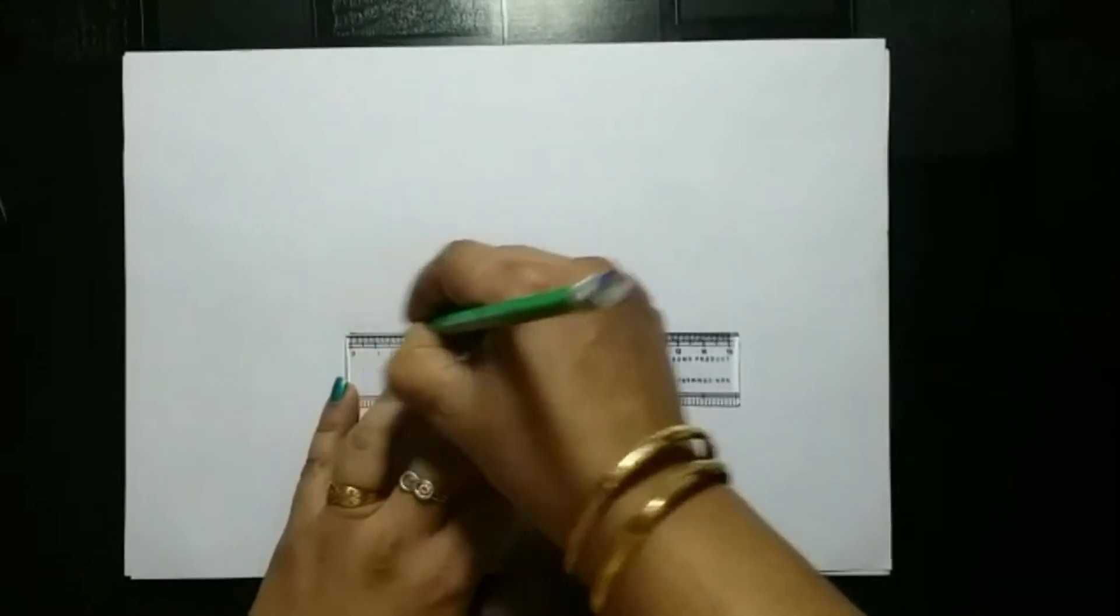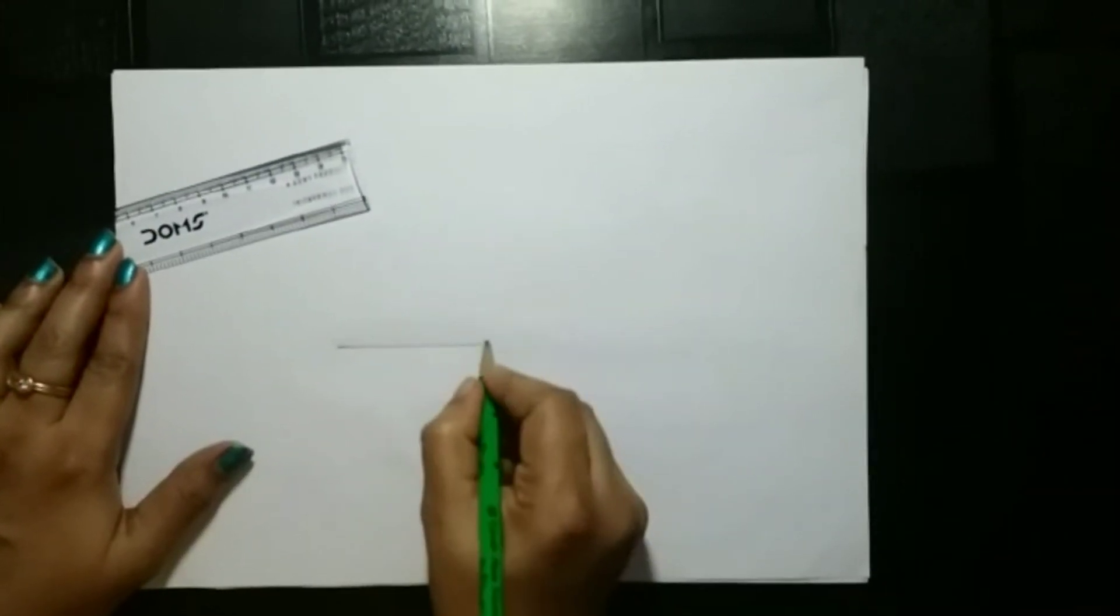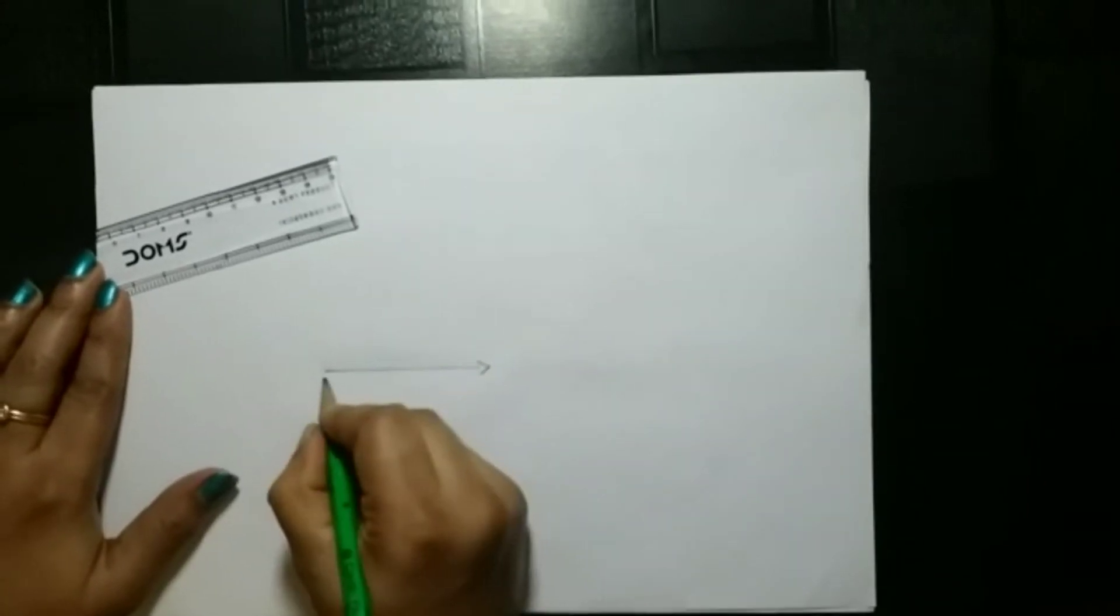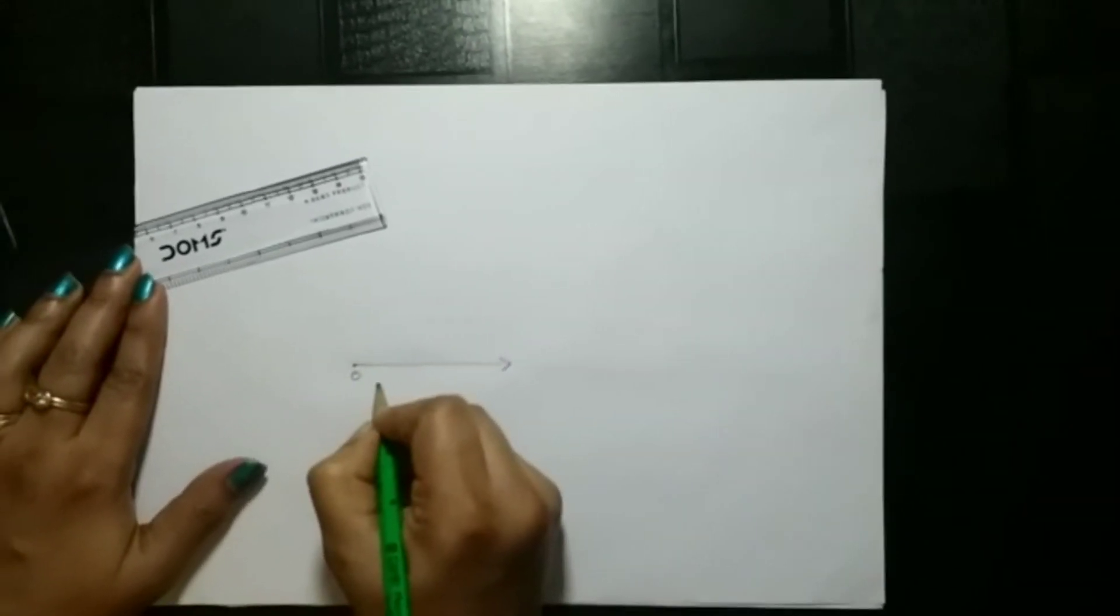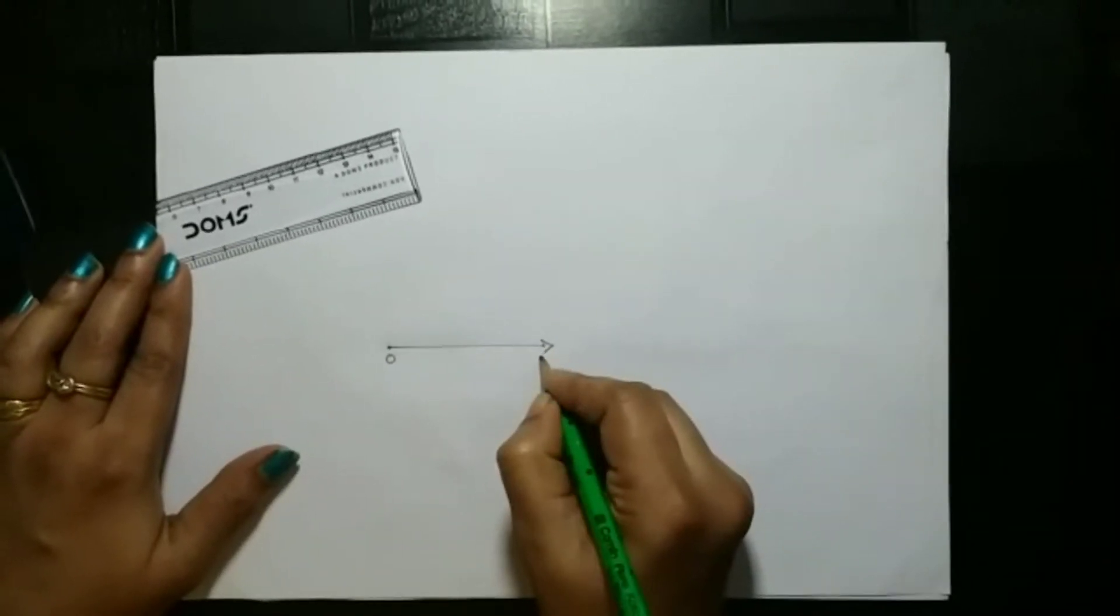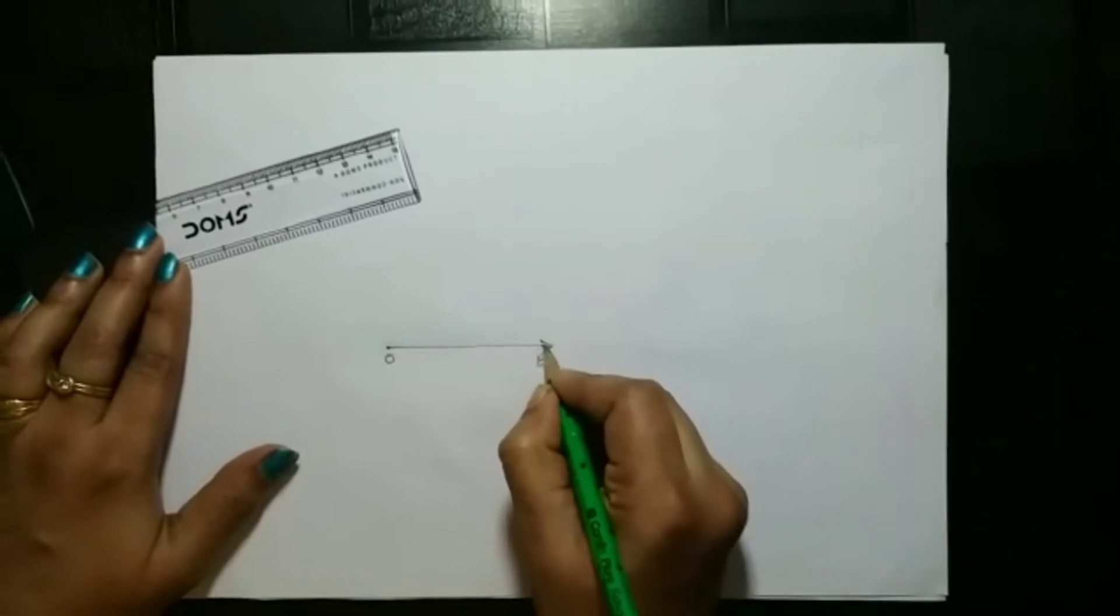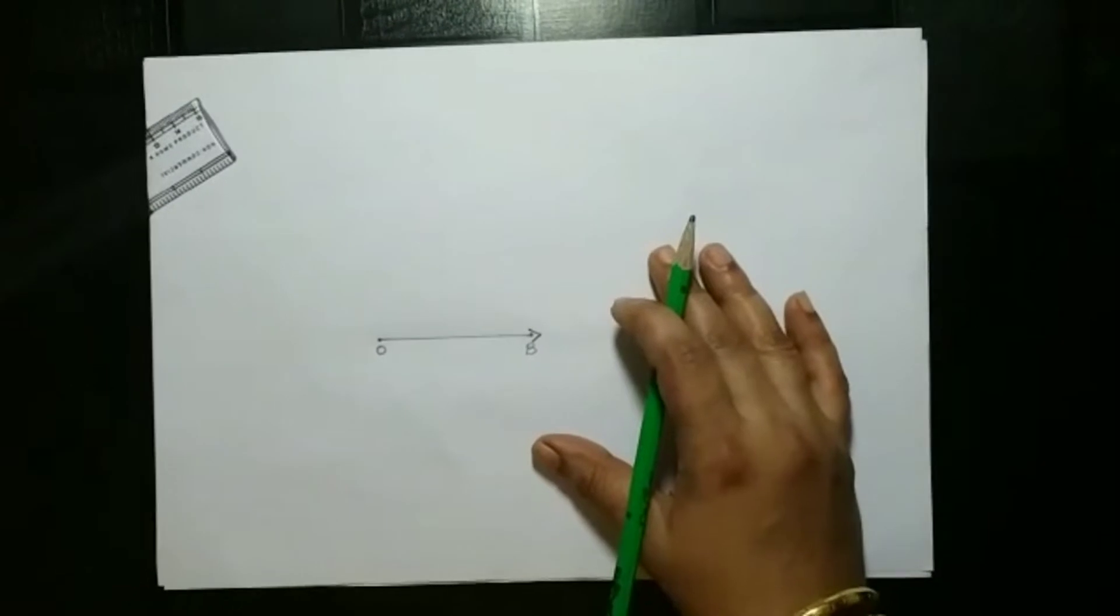This is a ray, so this point I'm marking it as O and here, this ending point I'm marking it as B. So there's point B.